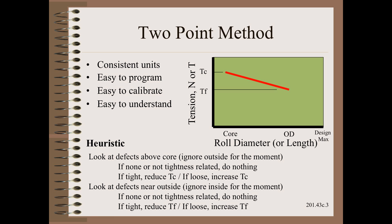The two point method is consistent and super easy to work with. Let me illustrate by giving you a heuristic that can be taught to anyone facing winding defects. All they need to know first is where the defect is found, such as near the core or near the outside. Second is whether the defect is tight, loose, taper or other defect. If the defect favors the core, adjust the starting tension accordingly. If the defect favors the outside, adjust the finishing tension accordingly. What could be simpler?